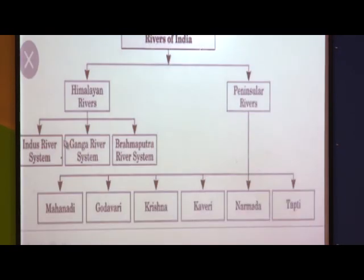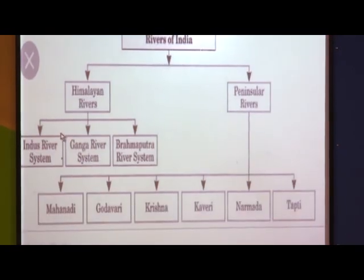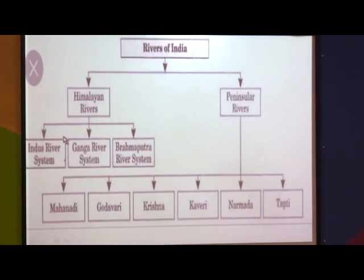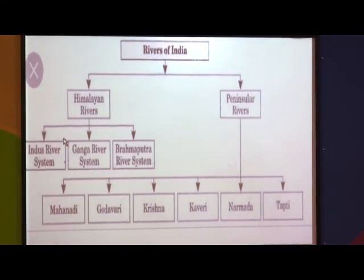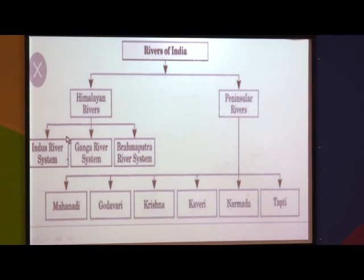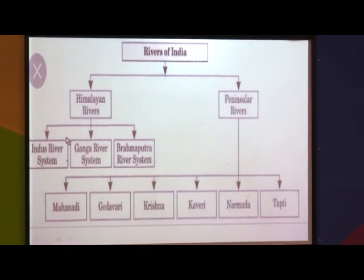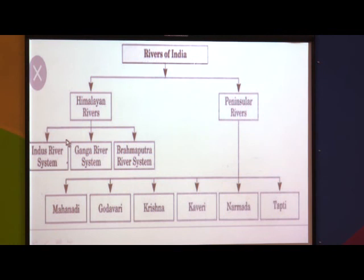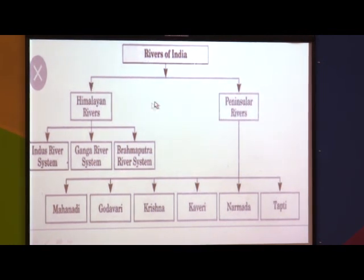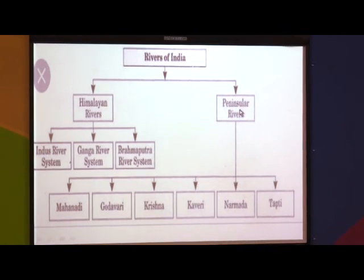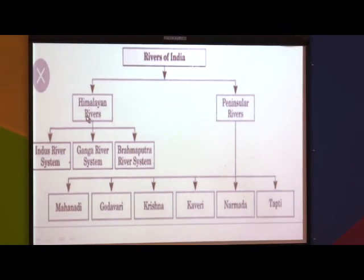Let us start with our mind map. Indian rivers are very important because they are a very good source of fresh water in India. Indian rivers are classified into two groups: Himalayan rivers and Peninsula rivers. The source of origin of Himalayan rivers is in the Himalayas, and the source of Peninsula rivers is on the peninsular plateau.